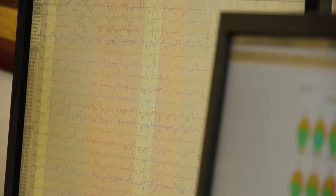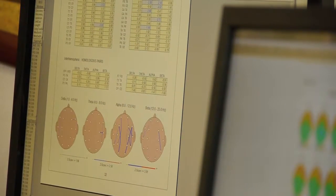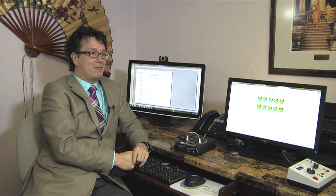And then we can start making training sessions that can help bring this back to normal. If someone's having trouble sleeping, they might have low delta in a certain part of their brain. So we can actually develop a program to increase the delta, allowing them to have better sleep.